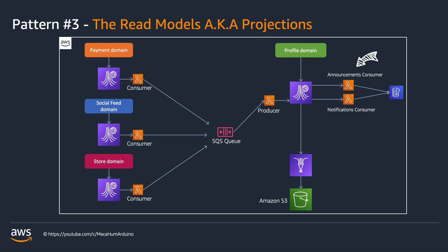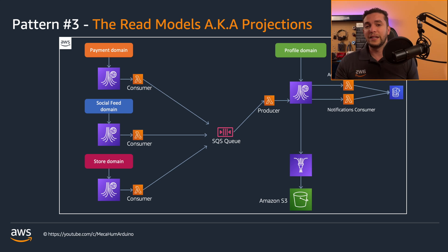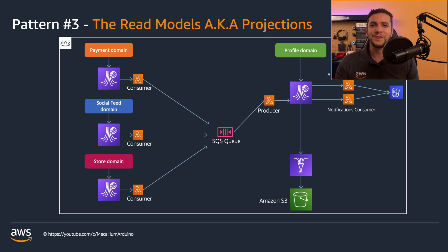The profile team has built multiple consumers updating one DynamoDB table with all the information for the specific user. The announcements consumer picks any event of type announcement, does some processing if required, and then updates the user's document. The notifications consumer picks any event of type notifications and increments a counter somewhere in the user's document.